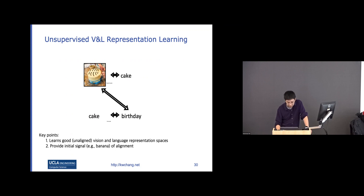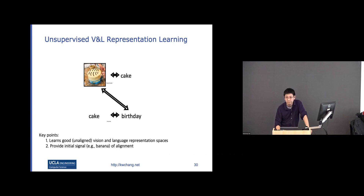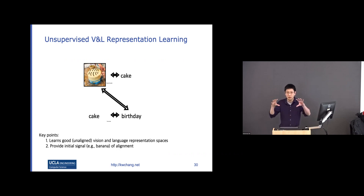The idea is that it might be hard for the model to learn that cake and birthday are related from scratch. An object detection model can detect a cake, and in the text part you know cake and birthday are related. But to align these two, you need some anchors to put them in the same space. With anchors, the model can align these two spaces, and then everything else follows.